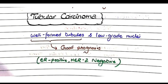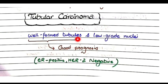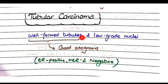Tubular carcinoma features well-formed tubules and low-grade nuclei. Well-formed tubules indicate high differentiation, so these tumors have a good prognosis. This can be remembered by the name — tubular implies well-formed tubules. These tumors are usually ER positive and HER2 negative.